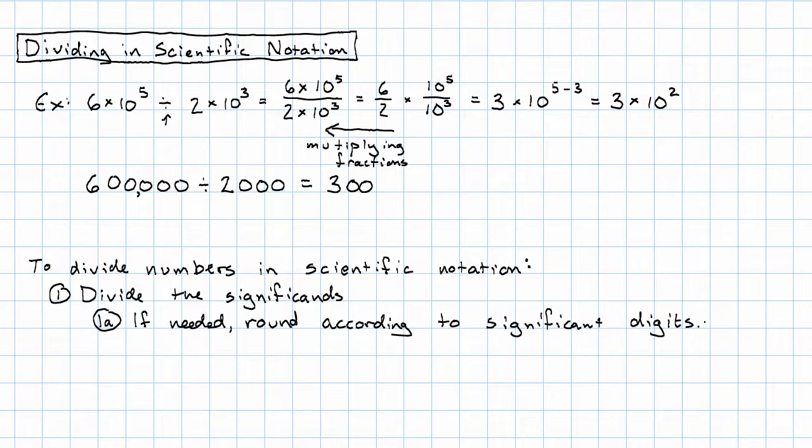If we need to round, we're going to round according to significant digits. We're not just going to round to whatever place we feel like. We're going to round to whatever place the significant digits tell us we ought to round to. So we'll round according to significant digits. And that's going to give us our new significant.